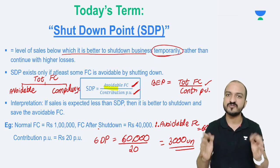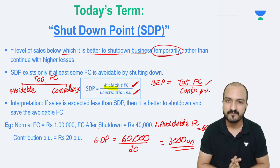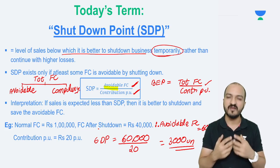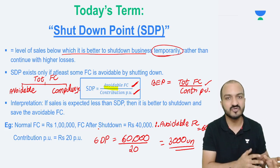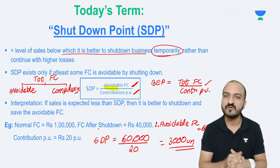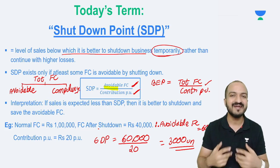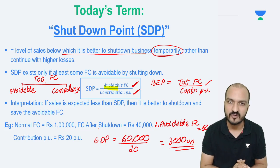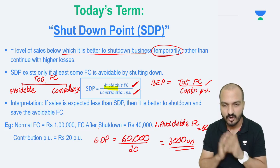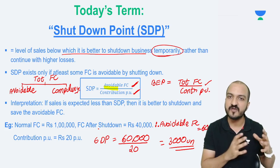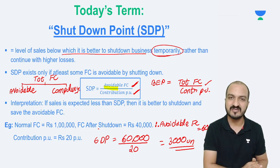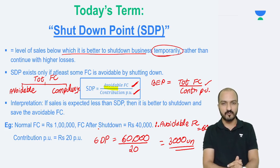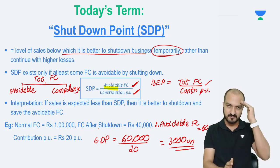That's our concept of shutdown point. This concept is used at many places — it is applicable in CA Intermediate and also at CA Final level. It is widely applied at many places in the subject of costing and is not particular to any specific chapter. I hope this gives you some sense of the concept of shutdown point. Until next time, thank you very much. Bye-bye.